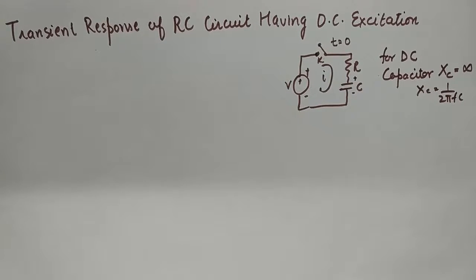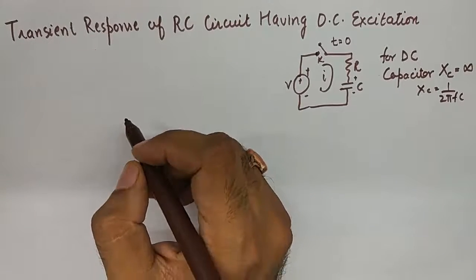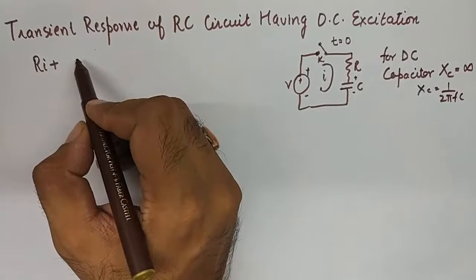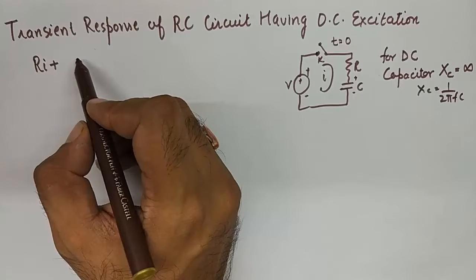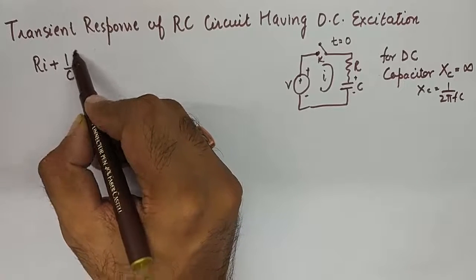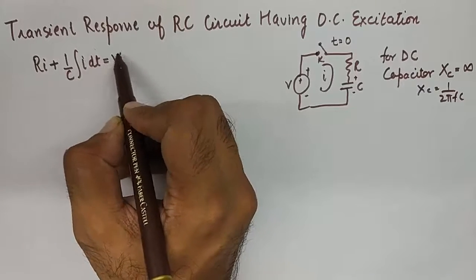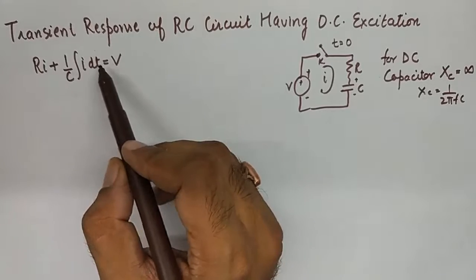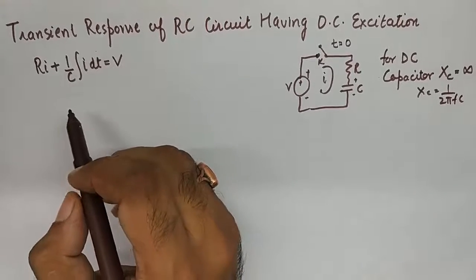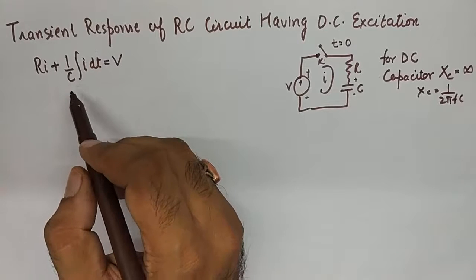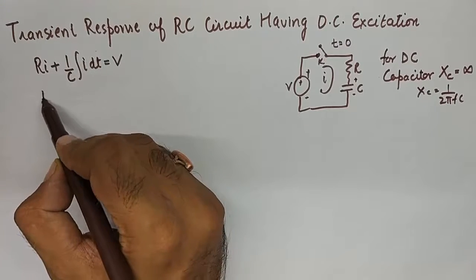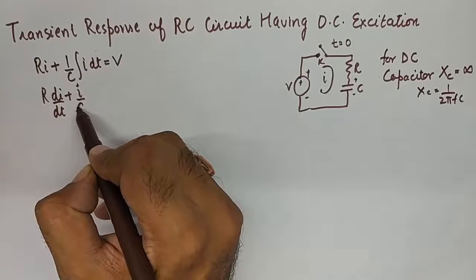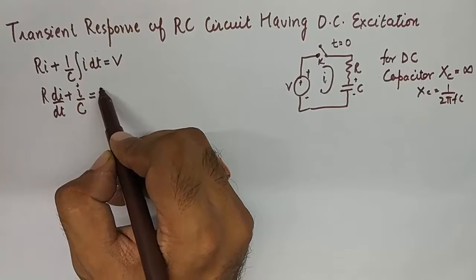So that being said we will study the mathematics of this circuit. Now we can write down from Kirchhoff's voltage law that the voltage across each of these elements and the voltage source together will form up this equation. And differentiation of this equation will result in Rdi/dt plus i/C equals 0.